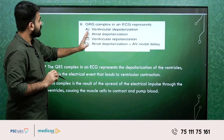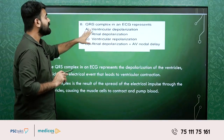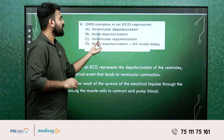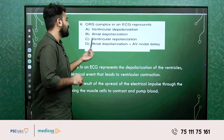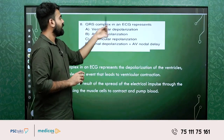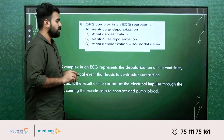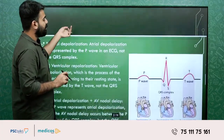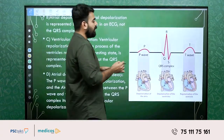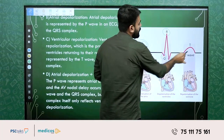The third question: QRS complex in an ECG represents which of the following? The options are ventricular depolarization, atrial depolarization, ventricular repolarization, or atrial depolarization plus AV nodal delay. In the ECG there are five waves: P, Q, R, S, and T. We have the P wave, the QRS complex, and the T wave.